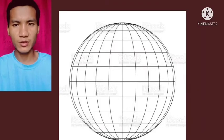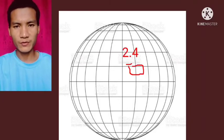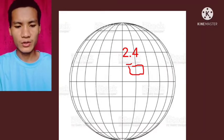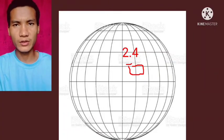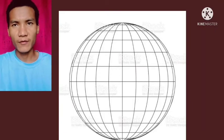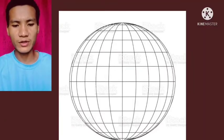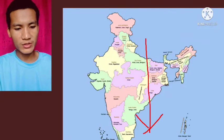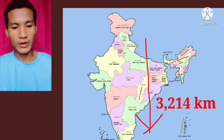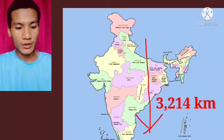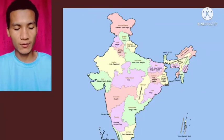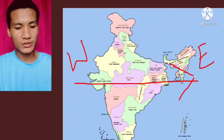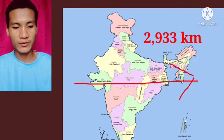India covers around 2.4% of the land area of the world. This is the small portion of the earth that is covered by India, and the remaining land masses are covered by other countries. The length from north to south is 3,214 kilometers, and from west to east is 2,933 kilometers.